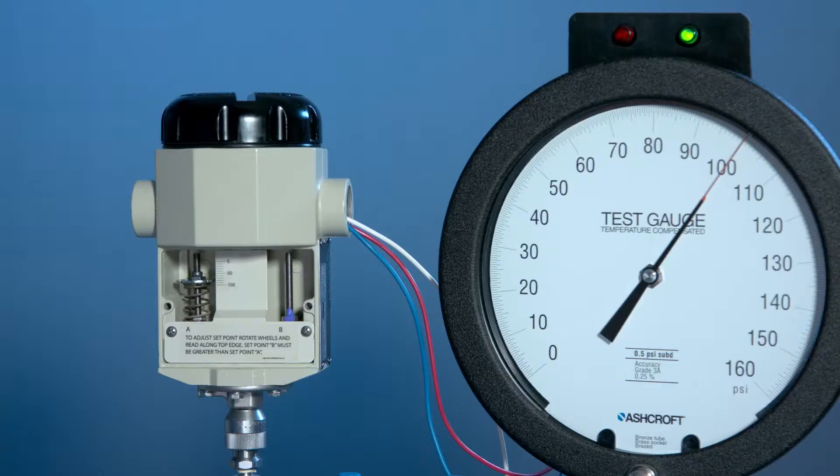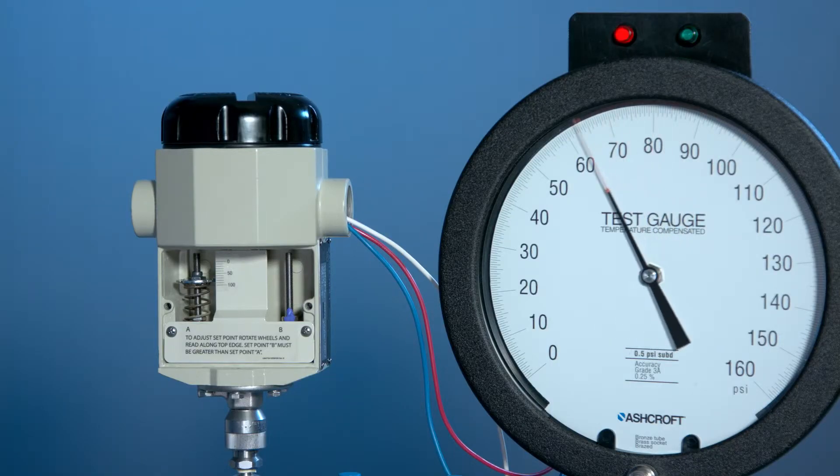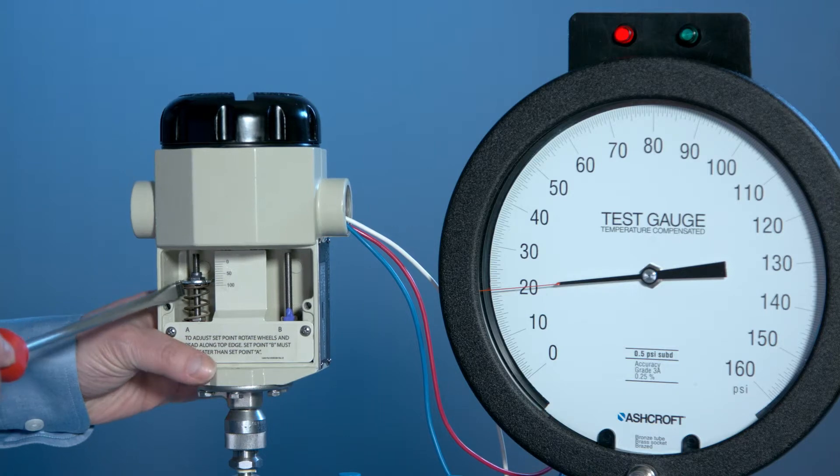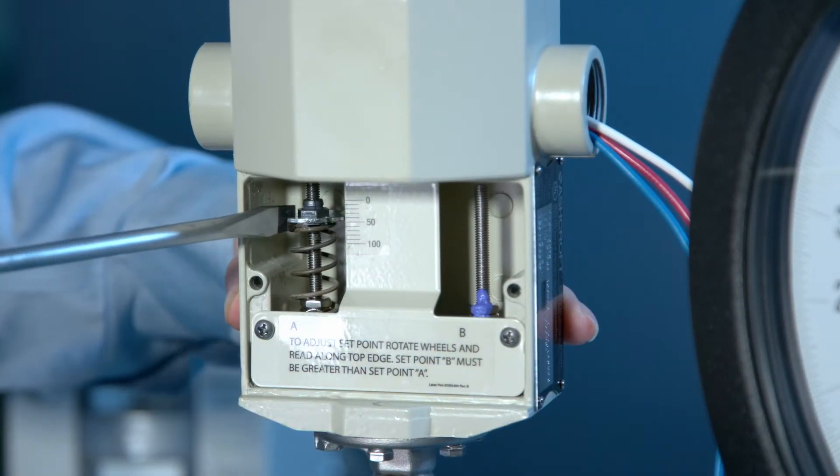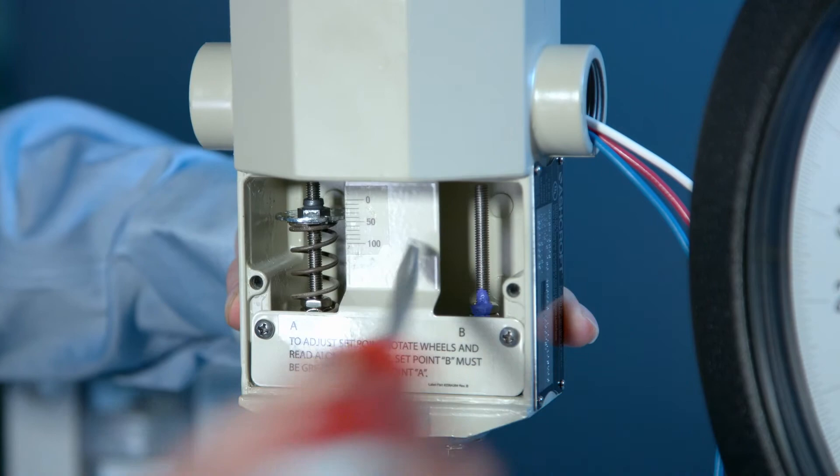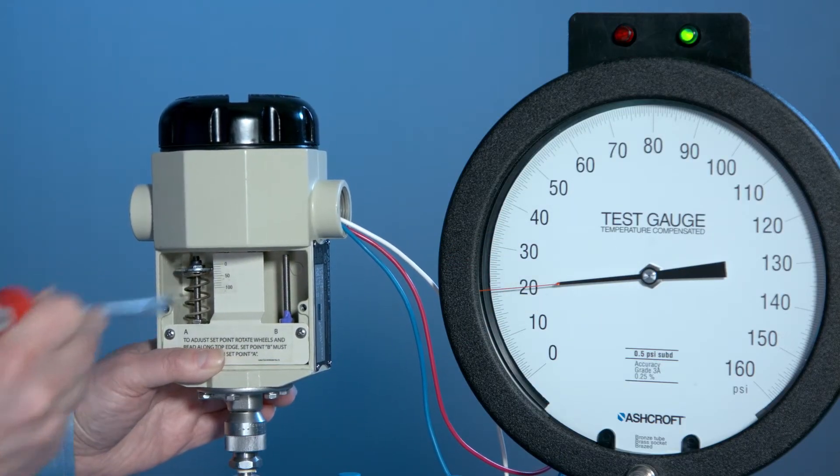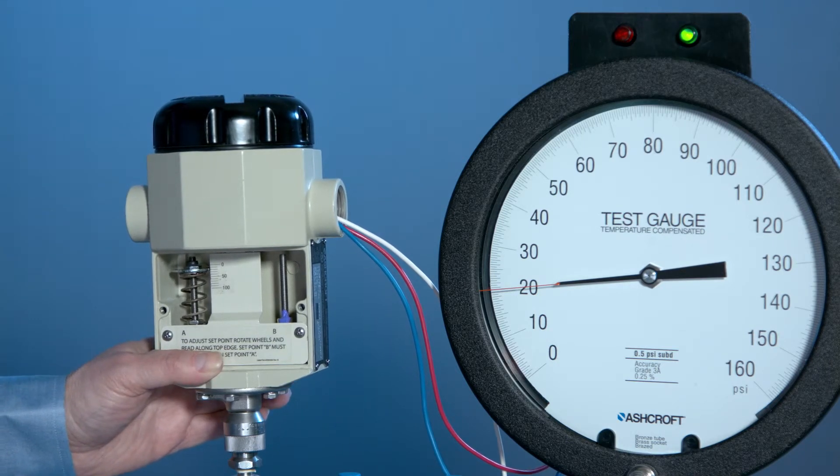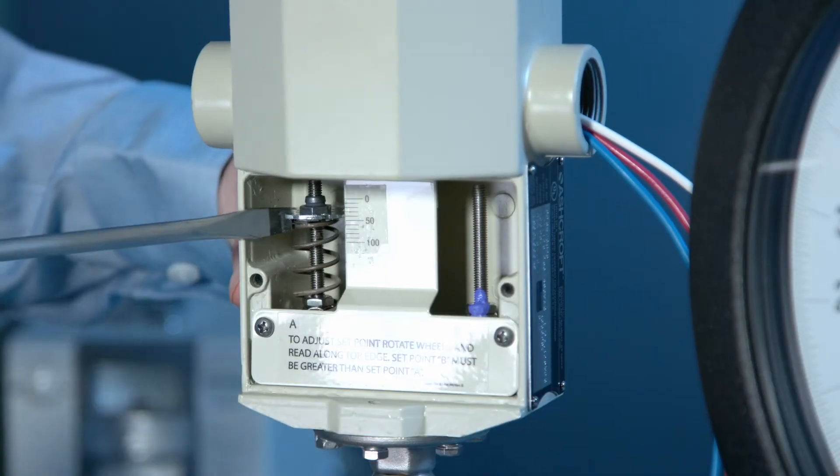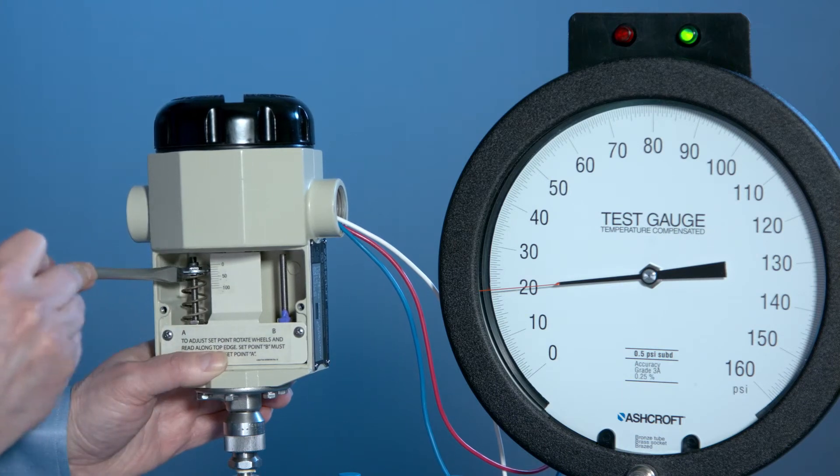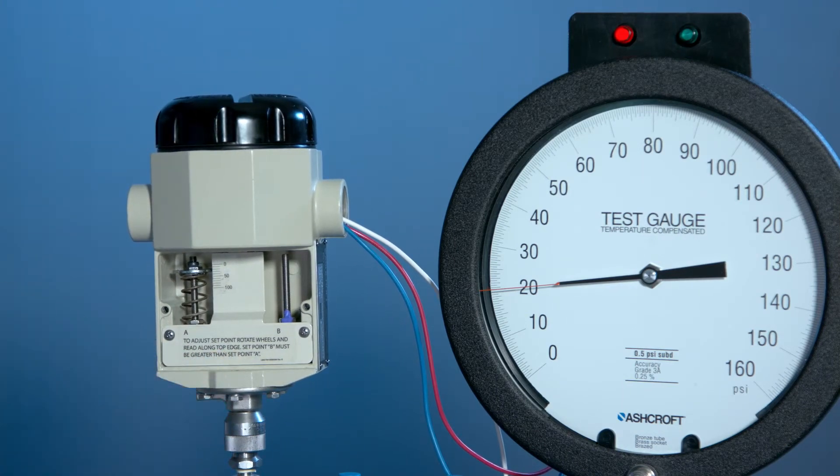Now we're going to bring it back down to 20 and turn the adjuster counterclockwise to lower the setpoint. We are going to get it to turn on at that point, and then get it to just turn off. It turned on green, which is good. We are now going to turn clockwise to get the switch to turn off, and that should be our setpoint.